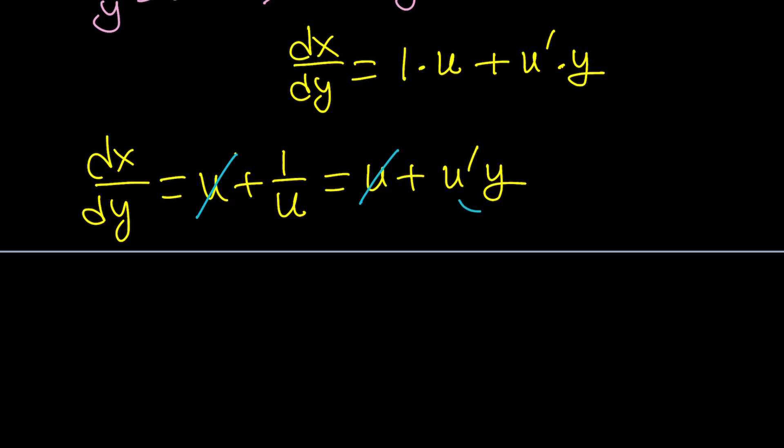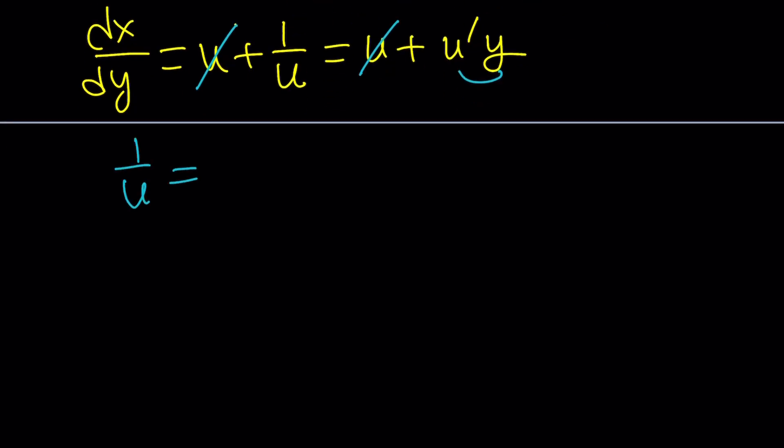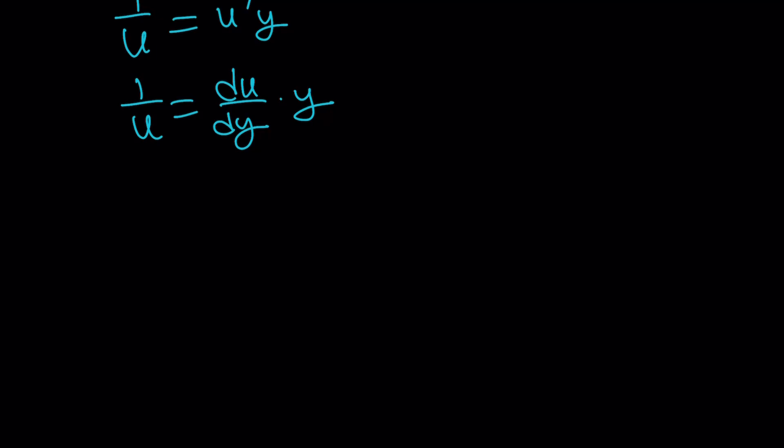Notice that this is a product and we can separate them. Let's go ahead and write the u'. I'm going to replace u' with du/dy. Again, we're always differentiating with respect to y, not x. So let's go ahead and put the u terms on the same side. So it's going to be u du = dy/y. If you put the dy here, and now we're going to divide by y, then u and du will be multiplied. Make sense? Cool.